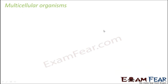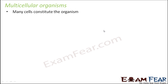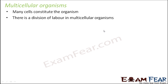Now let us talk about multicellular organisms. These organisms have multiple cells — many cells together form that organism. In unicellular organisms, there is just one cell and that one cell performs all the functions. But here we have many cells — millions, billions, or even trillions. So which cell is going to perform which function? In multicellular organisms, there is division of labour.